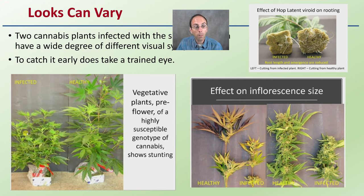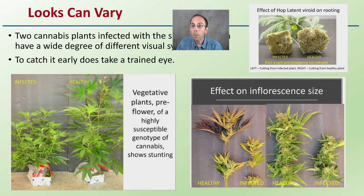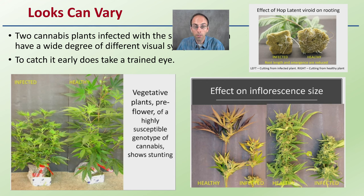You can see we have obvious stunting here in vegetative plants, pre-flower. High susceptibility of genotypes shows stunting. Sometimes the roots will be affected and not really getting great proliferation of roots, even though they're not discolored. And then the inflorescence or the flowers can also be infected. So it really affects roots, shoots, as well as the final flower.